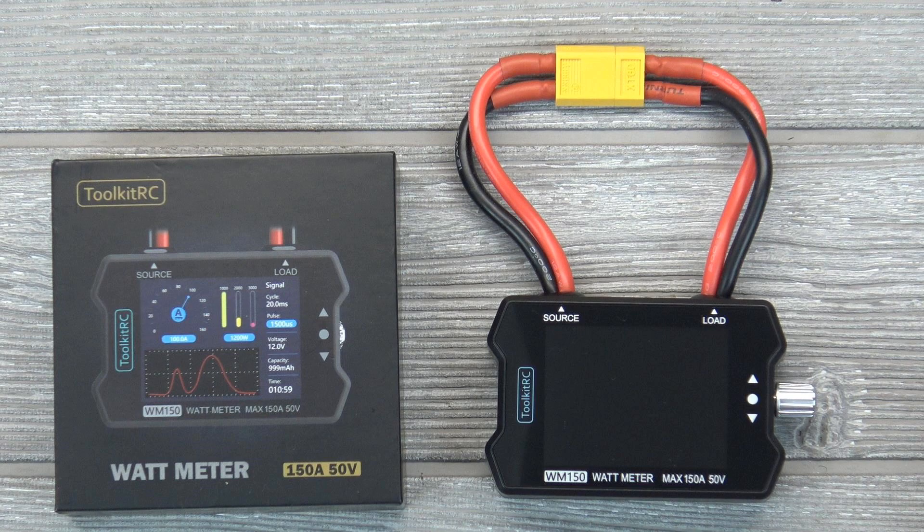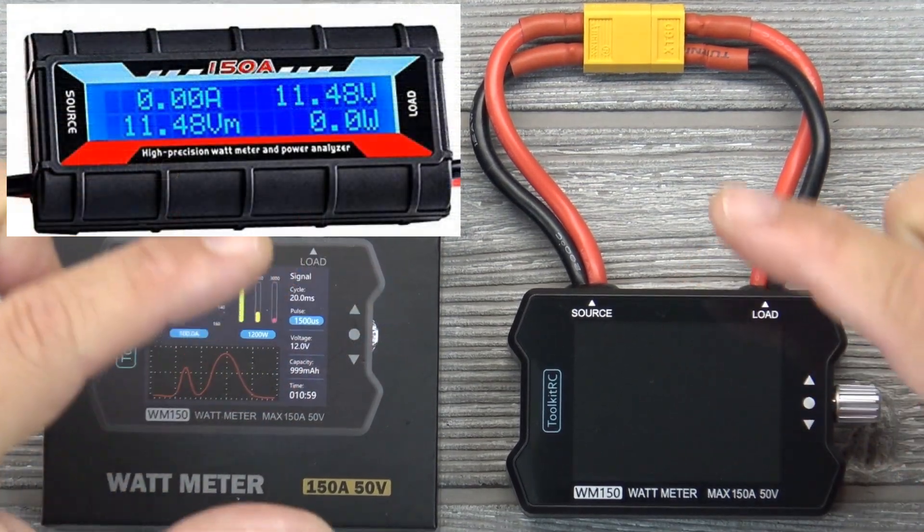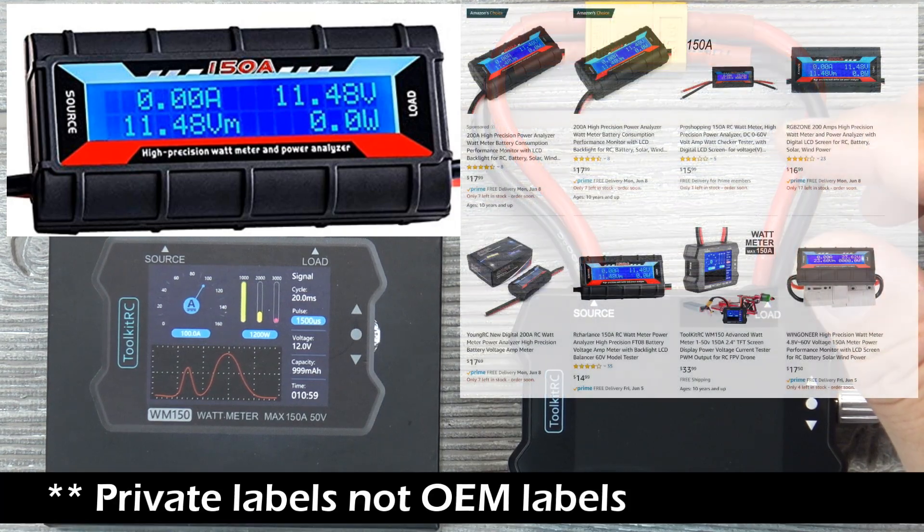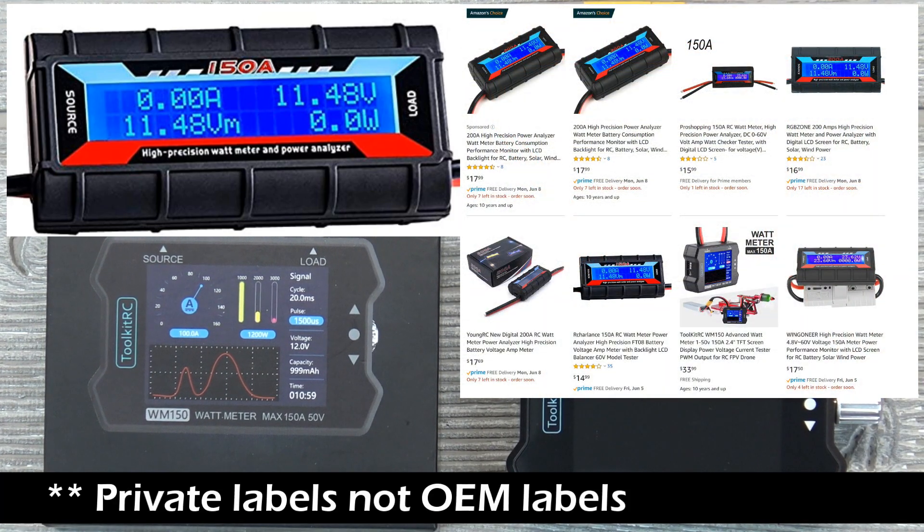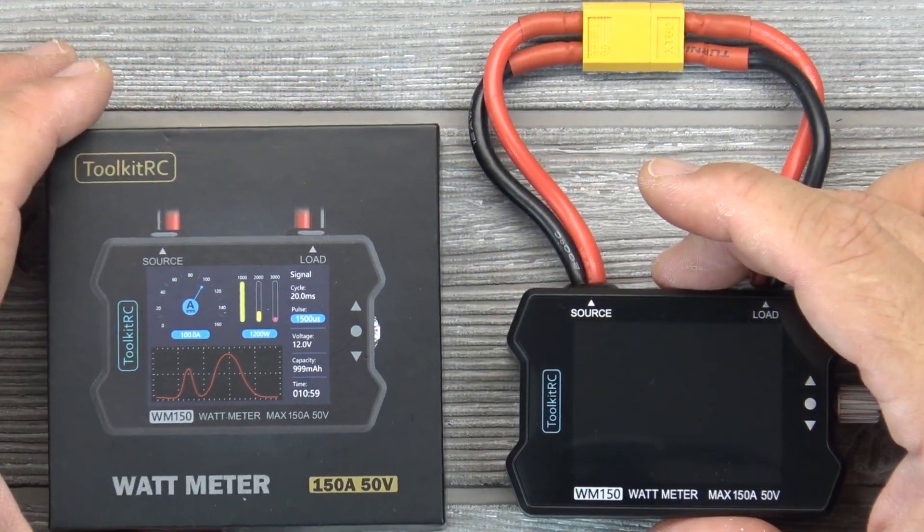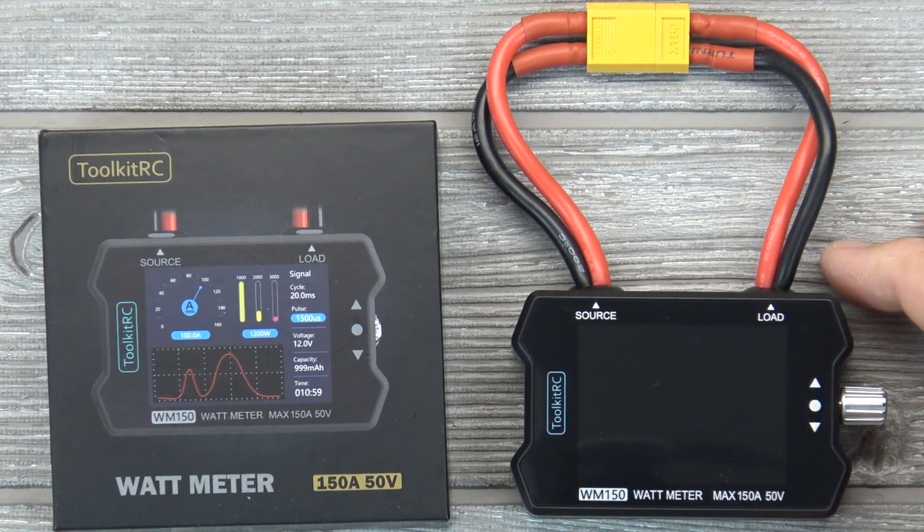But there are two relatively easy to find Watt Meters out there. The first one is a black one that's kind of long and it's got a blue LCD screen. That thing shows up under a whole bunch of different OEM labels and it's just a basic Watt Meter. This Watt Meter by Toolkit RC has been showing up in more and more places. You can get it on Banggood and Amazon and a couple of different other places.